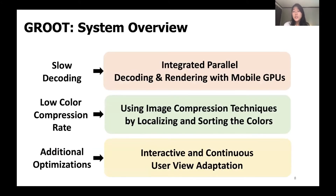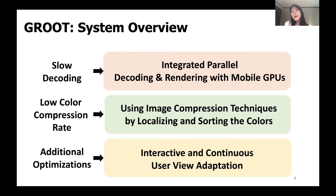To tackle the challenges mentioned earlier, we present GROOT, which consists of three distinct technologies. First, we leverage the mobile GPUs for integrated parallel decoding and rendering to overcome the slow decoding speed and meet both the frame rate and the motion to photon latency. Next, we propose a novel color compression scheme to improve the compression rate while preserving perceptual quality. Lastly, to further reduce computing complexity and network bandwidth, we apply interactive user view adaptation techniques in real time.